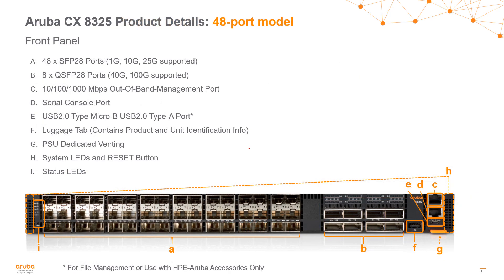Zooming in a little closer to these switches, we can see on the 48-port model the 48 ports support 1 gig, 10 gig, and 25 gig — these are SFP28 ports. You can see there are actually three rows of them on the left side of the switch. On the right side of the switch, we can see the RJ45 out-of-band management port as well as the RJ45 serial console port. We also have a micro USB port as well as a standard USB port for file transfers and management using the Aruba CX app. You can see the airflow inlets on the right and left, the LED indicators on the left side of the switch, and a luggage tag on the lower right which gives you detailed information about the switch.